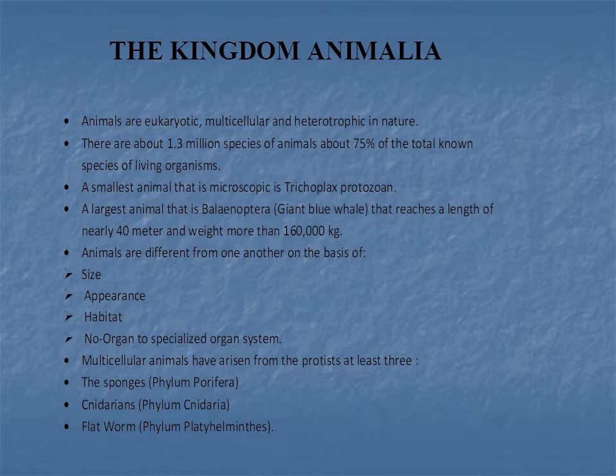Kingdom Animalia animals are eukaryotic — it means animals consist of eukaryotic cells, those cells which have a nucleus with a nuclear membrane. They are multicellular, meaning those animals which consist of more than many cells. And heterotrophic, meaning those which depend on others for food — that is known as heterotrophic in nature.